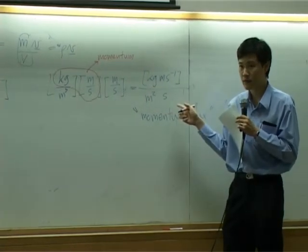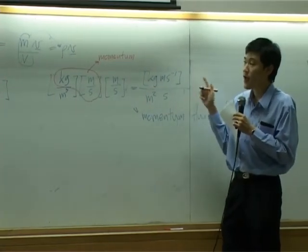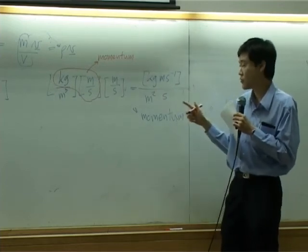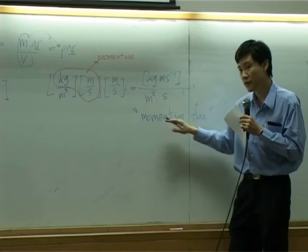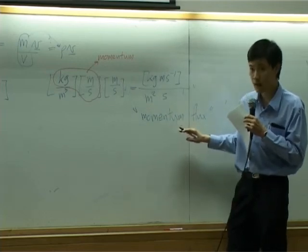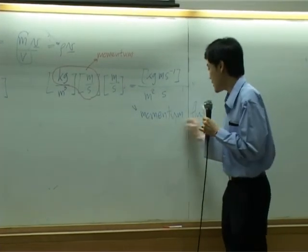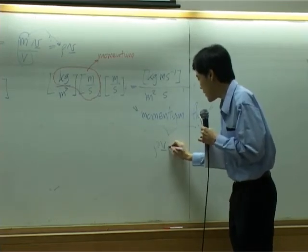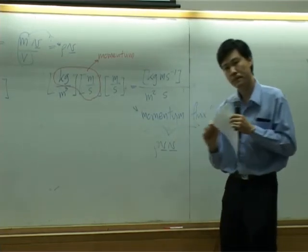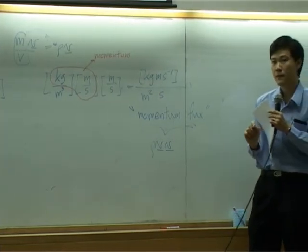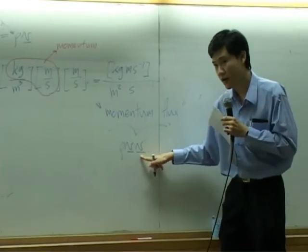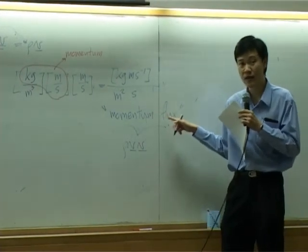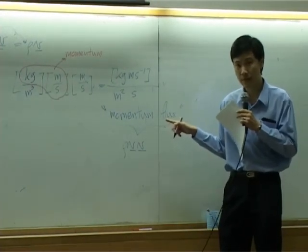So therefore, if we have momentum per unit volume, and you want to somehow convert it to be a momentum flux, basically you just multiply rho V by another V. So the variable rho V V should have unit of momentum flux, the same unit as the momentum flux.